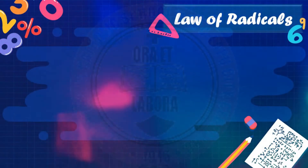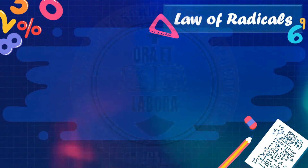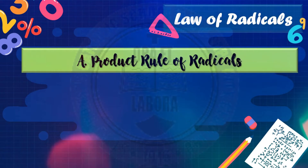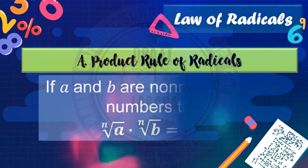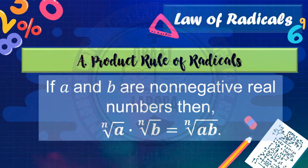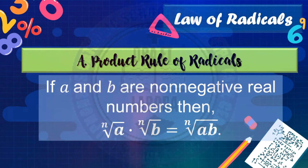The laws of radicals — we have two laws. The first law is the product rule of radicals, which states: if a and b are non-negative real numbers, then the n-th root of a times the n-th root of b equals the n-th root of a times b.